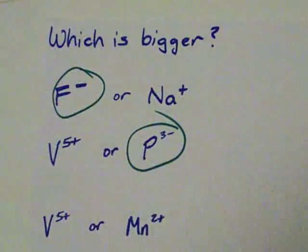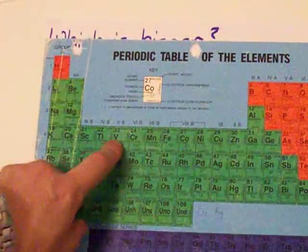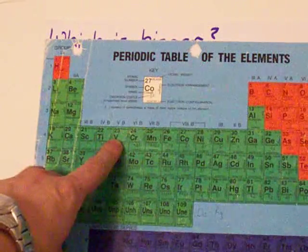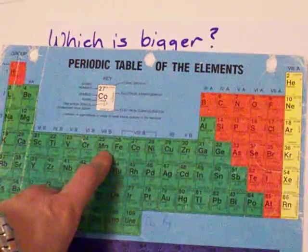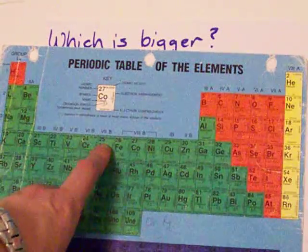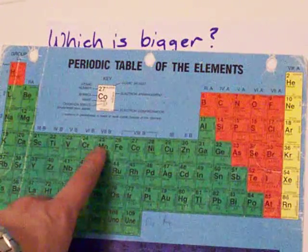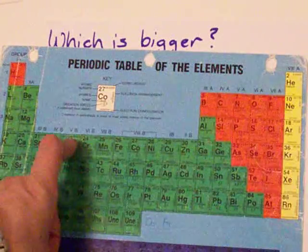Finally, we'll compare vanadium five plus and manganese two plus. Vanadium normally has 23. Lose five, you end up at 18. Manganese normally has 25 electrons. Lose two, you end up with 23 electrons.